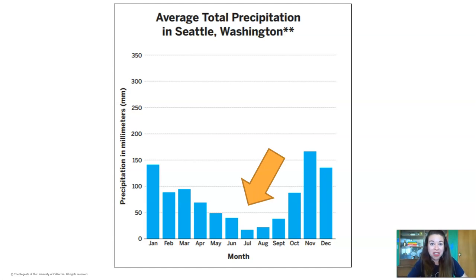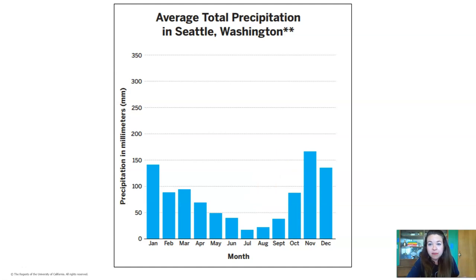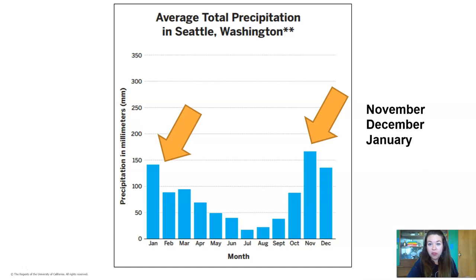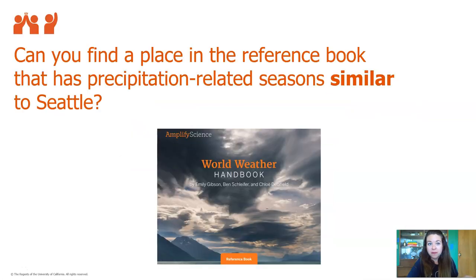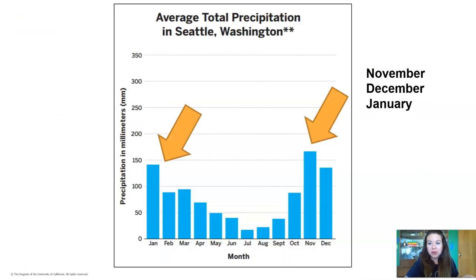The months of June, July, and August would be our dry season, and the months of January, February, March, October, November, December would be our rainy season.